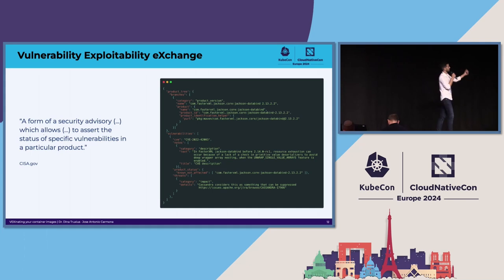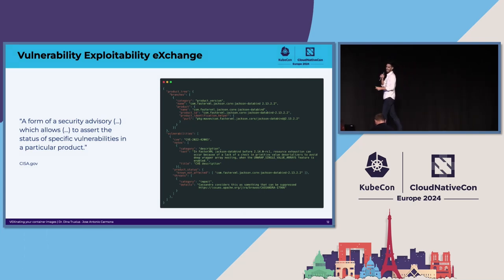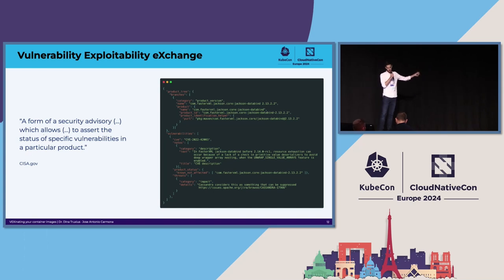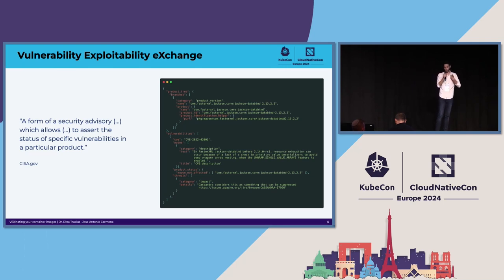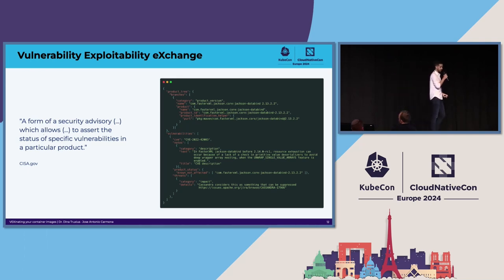VEX stands for Vulnerability Exploitability eXchange. Now I'll stop giving examples and give you the fancy definition: it's a form of security advisory which allows to assert a status of specific vulnerabilities in a particular product. As we like to cook, I have cooked my own definition of VEX — the way I like to understand VEX: it's just a way to add context to vulnerabilities.